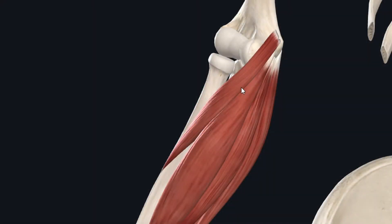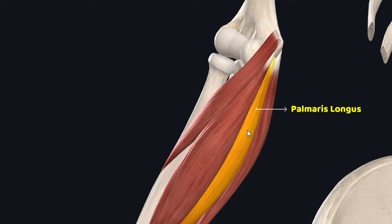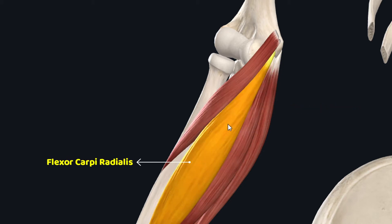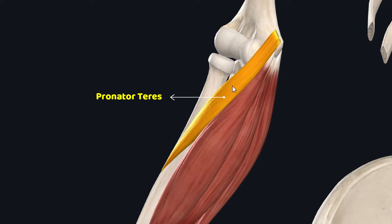The superficial muscles of the anterior forearm are a group of four muscles located in the anterior compartment of forearm, also called the flexor compartment of forearm. These are the most superficial muscles in this compartment, and that's why they are named the superficial flexors of forearm. These muscles include the flexor carpi ulnaris, palmaris longus, flexor carpi radialis, and the pronator teres muscle, in a medial to lateral direction.